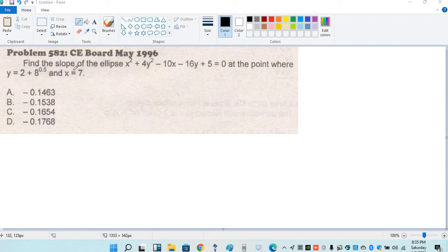So next problem: find the slope of the ellipse x squared plus 4y squared minus 10x minus 16y plus 5 equal to 0 at the point where y is given, so given y and x.